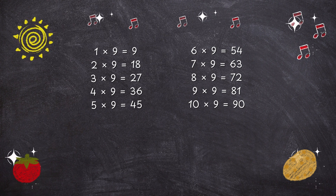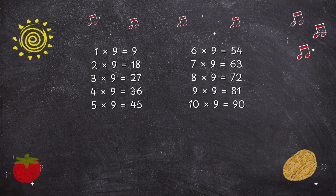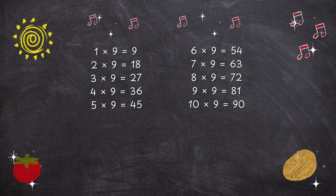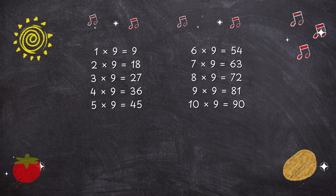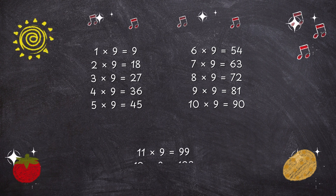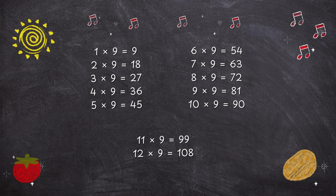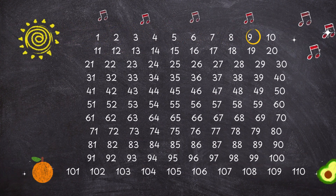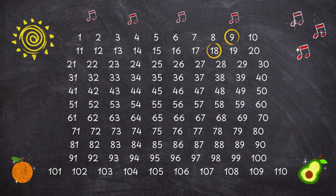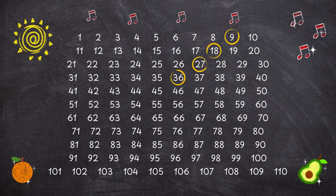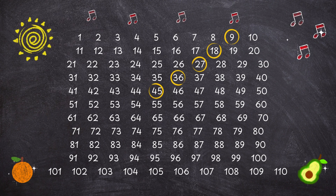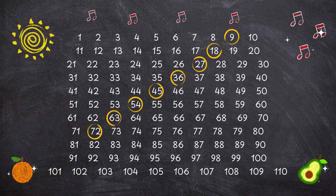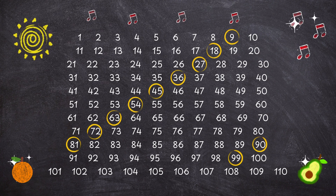8 times 9 is 72. 9 times 9 is 81. 10 times 9 is 90. 11 times 9 is 99. 12 times 9 is 108.